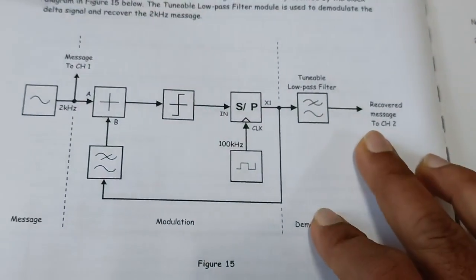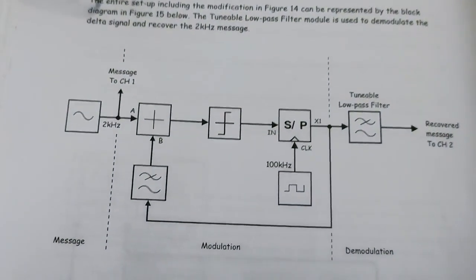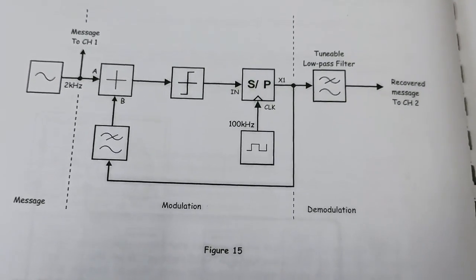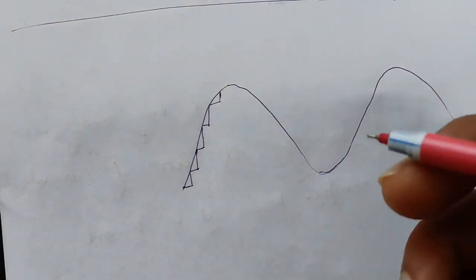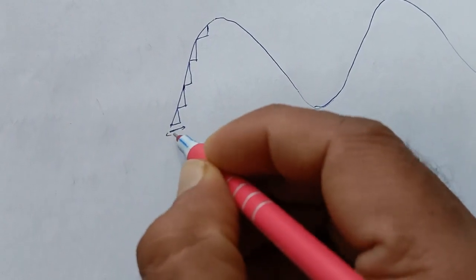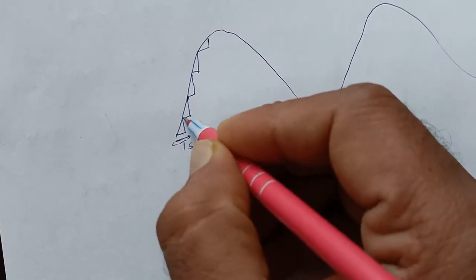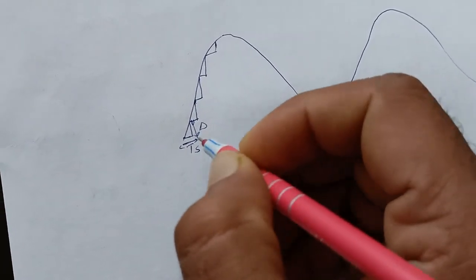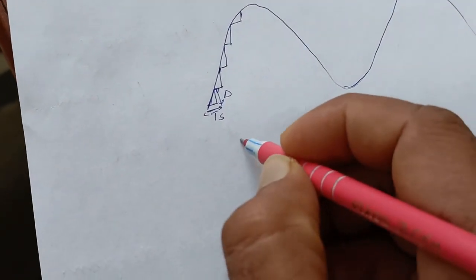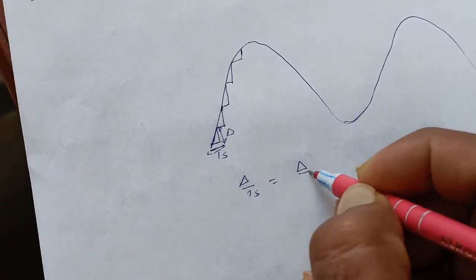There are sometimes errors in delta modulation: slope overload error and granular error. You can understand by the figure. If this is a sinusoidal signal, Ts is the sampling interval and delta is the step size.